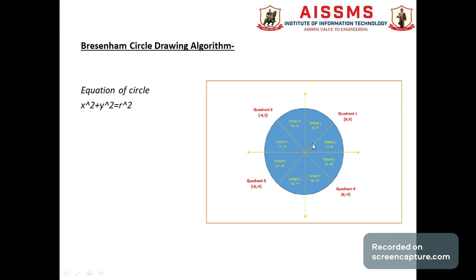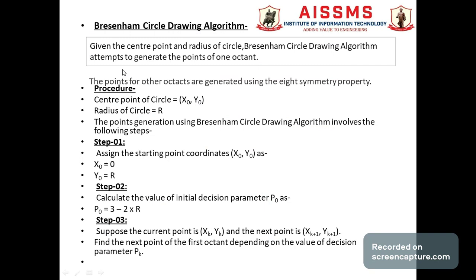Using positional symmetry, the x and y coordinates are changed for each octant. The first octant appears as (x, y) and the second octant is generated using the property of symmetry. The algorithm generates points for one octant, and the points of the other octants are generated using the eighth symmetry property, as discussed.